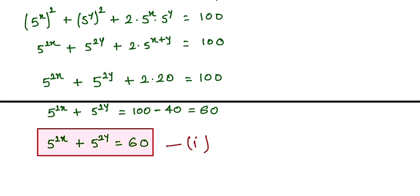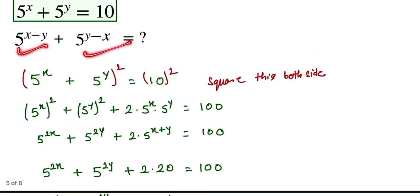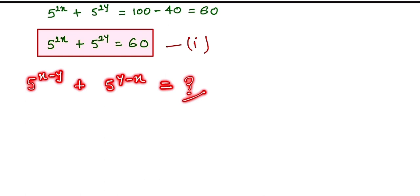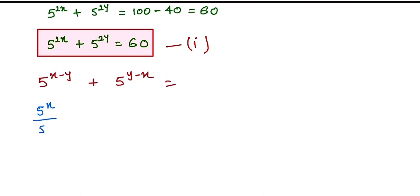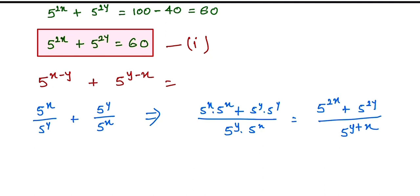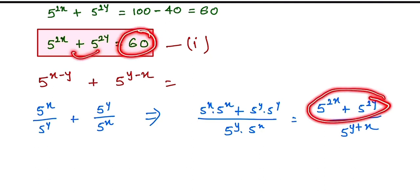Now we work on the target expression: 5 to the power x−y plus 5 to the power y−x. Writing the negative exponents as division, this becomes 5 to the power x divided by 5 to the power y plus 5 to the power y divided by 5 to the power x. Taking the LCM gives 5 to the power 2x plus 5 to the power 2y all divided by 5 to the power x+y. We already found 5 to the power 2x plus 5 to the power 2y equals 60, and 5 to the power x+y equals 20.